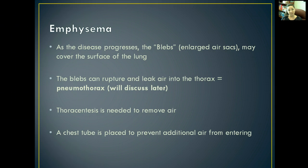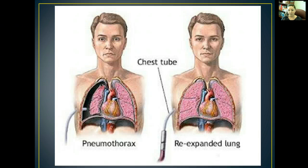A pneumothorax usually doesn't occur except in major trauma. A thoracentesis is then needed to remove air — up to this point, we've been removing fluid during thoracentesis, but here we may need to remove the leaked air as well. A chest tube is then placed to help prevent additional air from entering the pleural space and collapsing the lung further. Our whole goal with the chest tube is to allow for lung re-expansion by removing the trapped air.